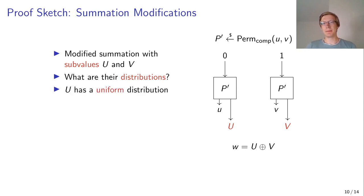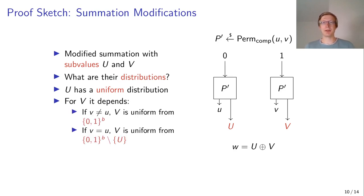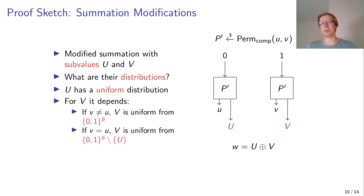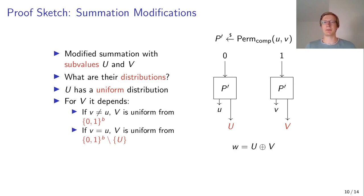First we look at big U, and it turns out it has a uniform distribution because it doesn't have any restrictions and everything is uniformly sampled. Big V also has a uniform distribution when small V is different from small U — it doesn't have any restrictions, so it's uniformly sampled from all possible values. However, if small V is equal to small U, we have a restriction: big V cannot be equal to big U, as that would mean we have a collision in the output of our PRP, which is not possible. So in that case, it is still uniformly sampled, but not from all values — only from all possible values except big U.